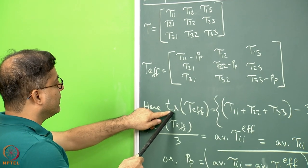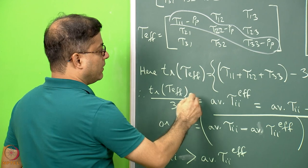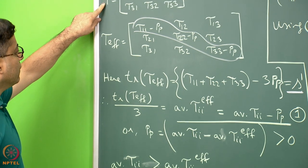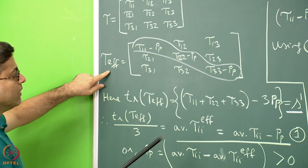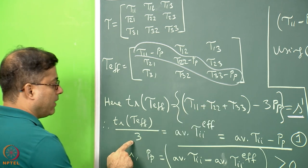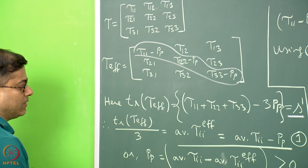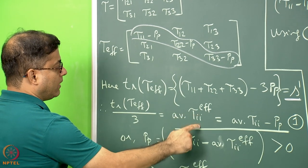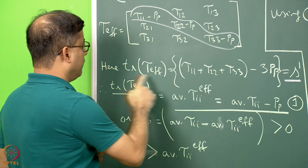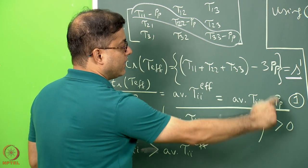The trace of tau_effective equals the sum of its diagonal elements, which I call S'. The difference from the trace of tau is that a term of minus 3PP appears. If I divide the trace of tau_effective by 3 to get the arithmetic mean, I can write: average tau_ii_effective = average tau_ii minus PP. So PP equals average tau_ii minus average tau_ii_effective.